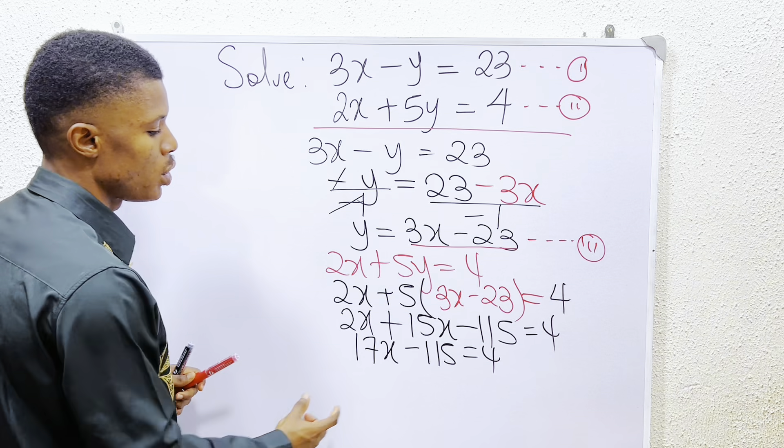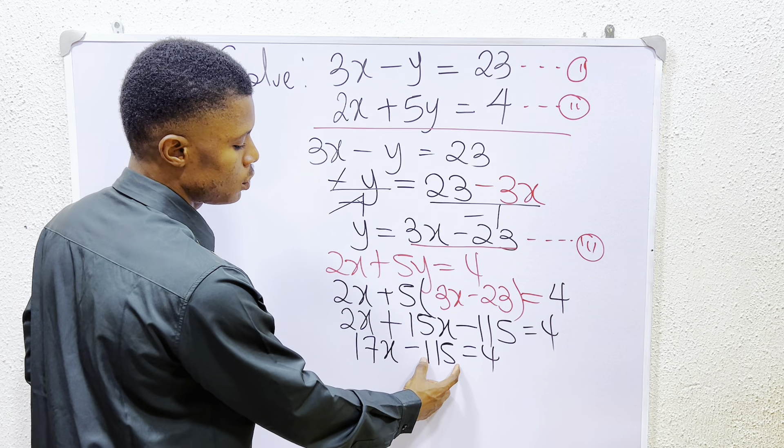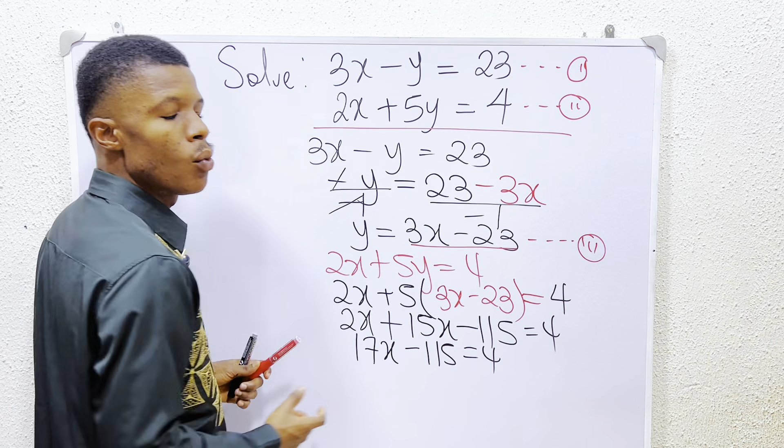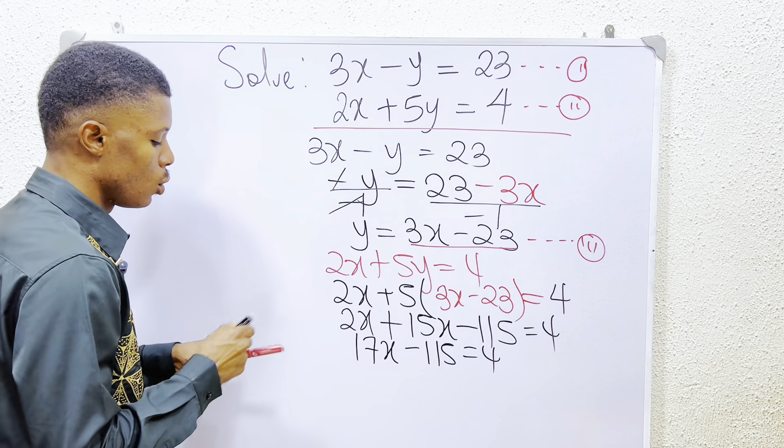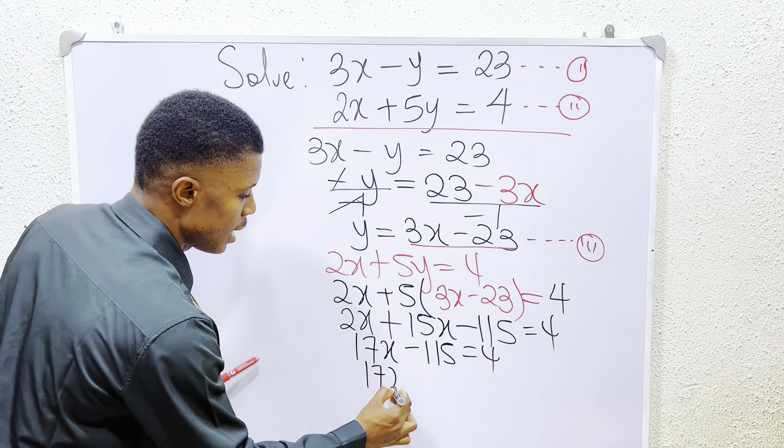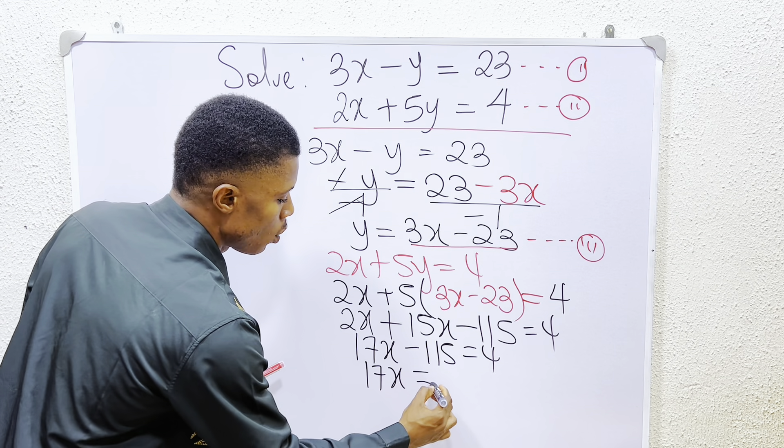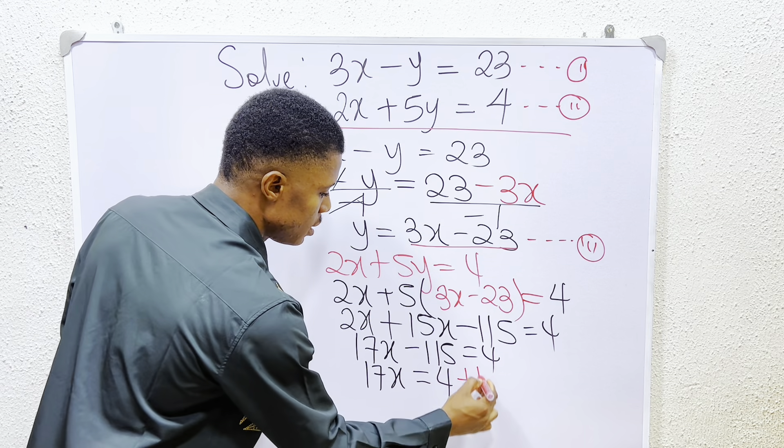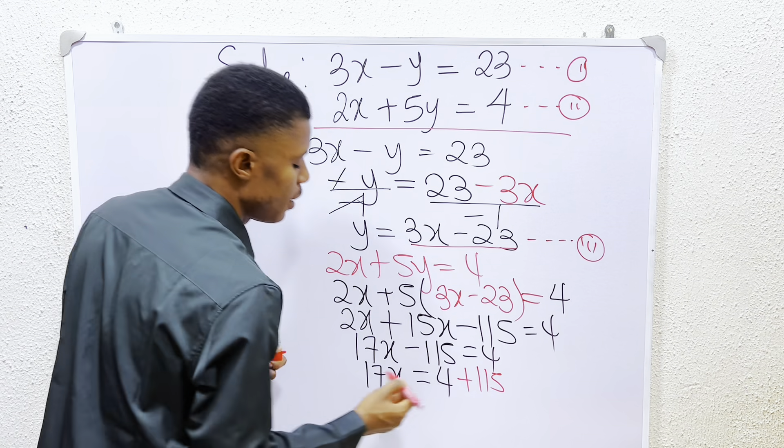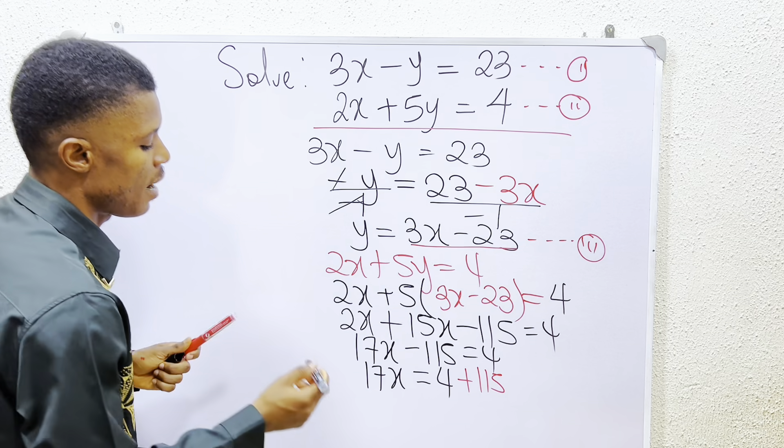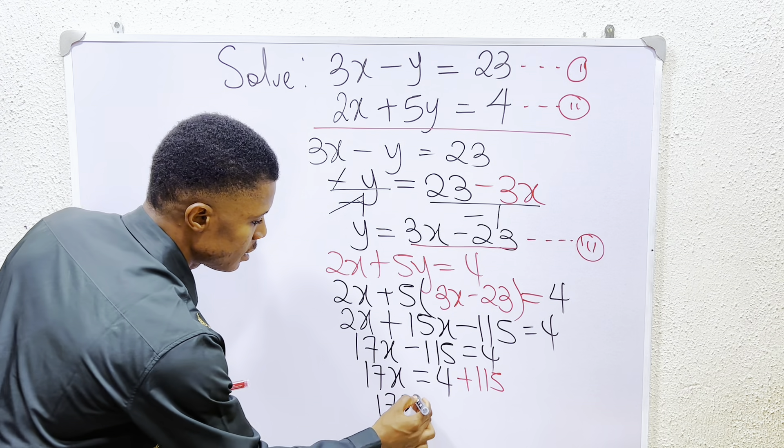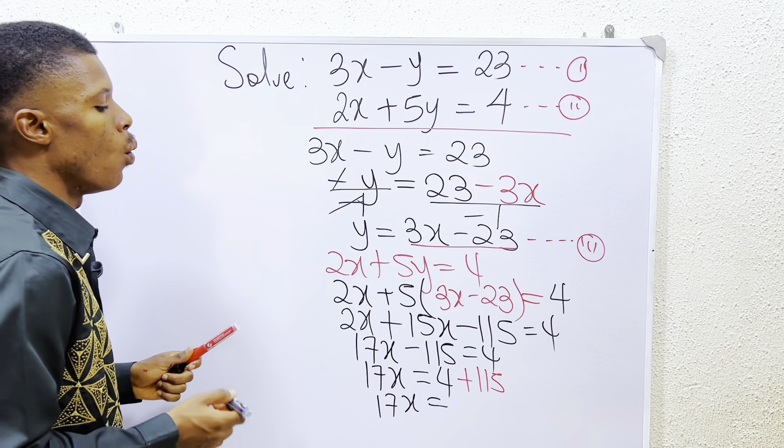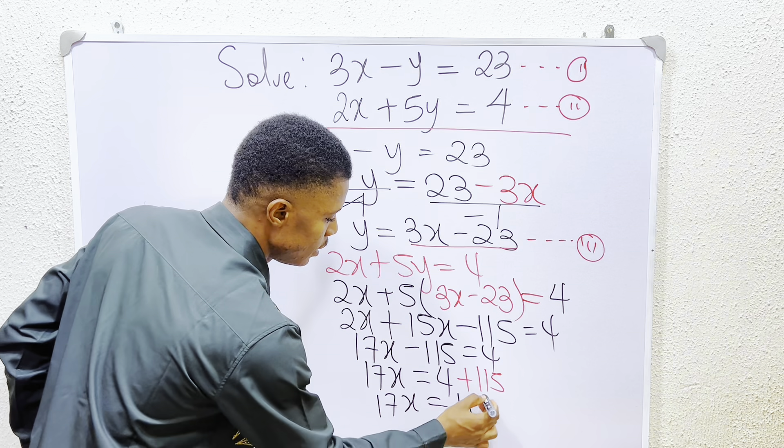So what do we do next? What we have to do is simple. We add 115 to both sides. So we have it as 17x is equal to 4, minus 115 crossing equality becomes plus 115. So we have it that 17x is equal to 119.